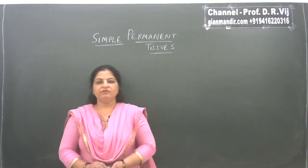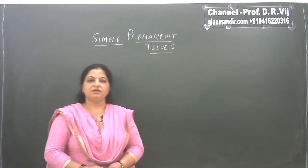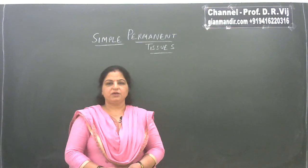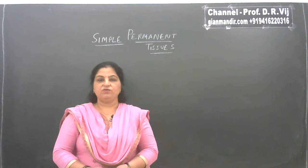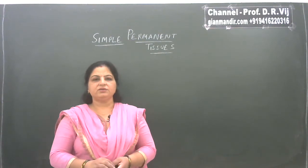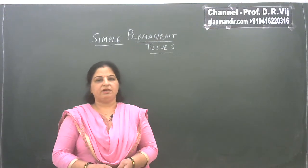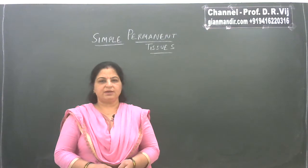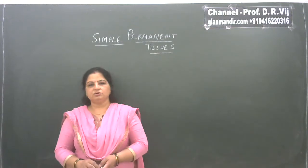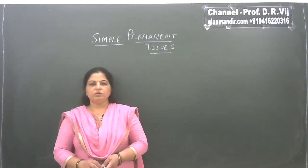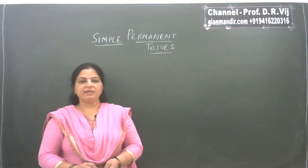Hello dear students. Today in this lecture we are going to discuss about another type of plant tissues, known as simple permanent tissues. As we have already discussed, plant growth is not uniform — it is localized to particular regions. That's why all plant tissues are divided into two categories: dividing tissues, known as meristematic tissues, and non-dividing tissues, known as permanent tissues. Permanent tissues are also of two types: simple permanent and complex permanent.